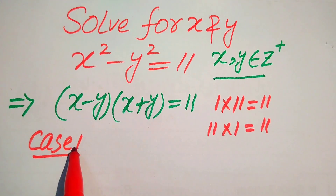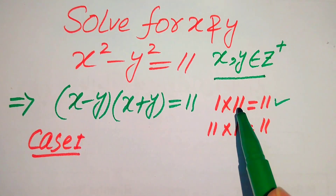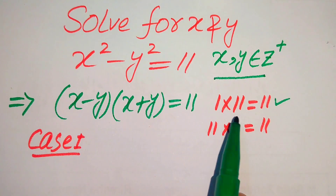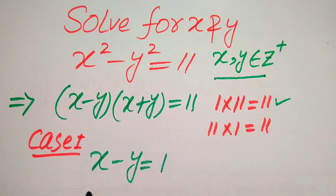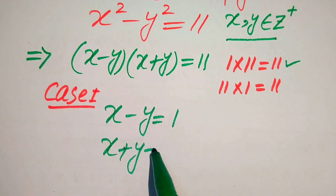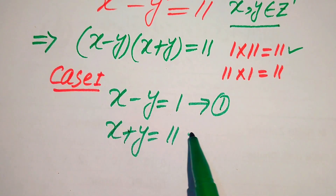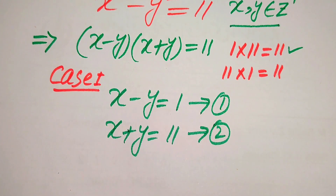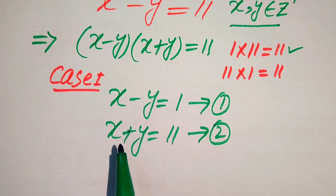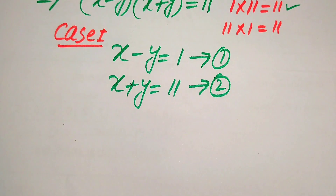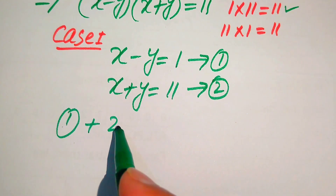In the first case, we compare the 2 factors with these 2 numbers. When we compare these 2 factors with 1 and 11, it is written as: x minus y equals 1 (equation 1) and x plus y equals 11 (equation 2). We find the values of x and y from the first case, then move towards the second case.